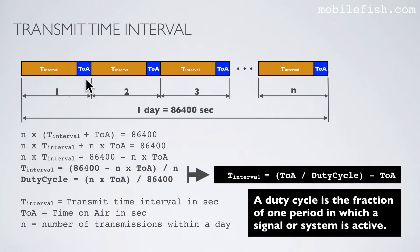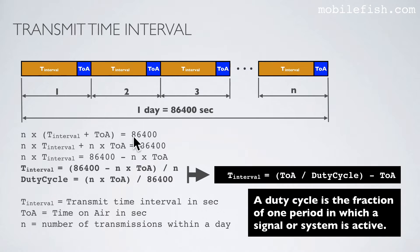Looking at this picture, for every transmission there is a waiting period called the transmit time interval and the message time on air. N is the number of transmissions within a day. Based on this picture you can create this equation: the transmit time interval plus the time on air, times the number of transmissions within a day, equals 86,400 seconds. The duty cycle is defined as the fraction of one period in which a signal or system is active. Here the period is a whole day, so the duty cycle is the number of transmissions times the time on air divided by 86,400.